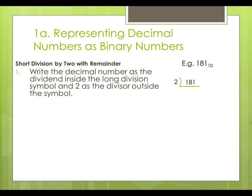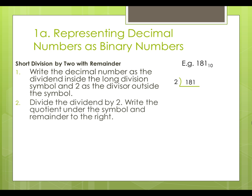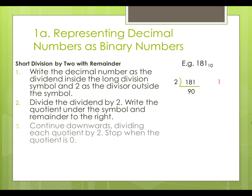Next, we will divide the dividend by 2. Write the quotient under the symbol and remainder to the right. Dividing 181 by 2, the quotient is 90 and the remainder is 1. Continue downwards, we shall divide each quotient by 2. Stop when the quotient is zero.